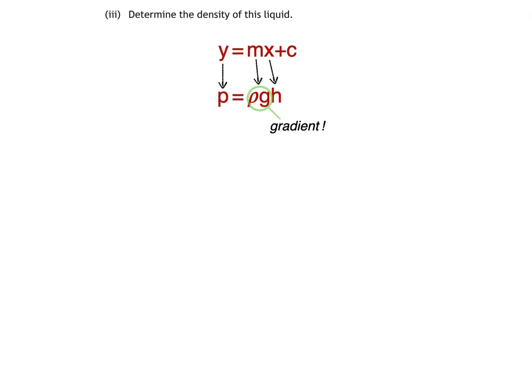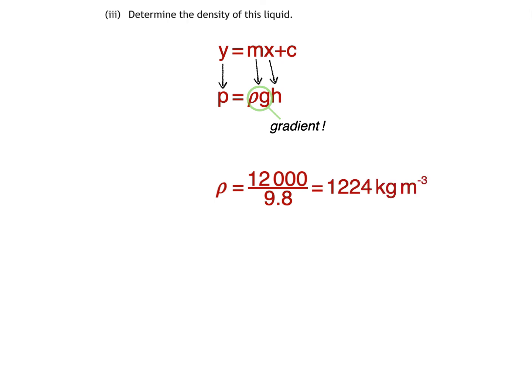Since we know that the gradient of our graph is equal to ρg, and we calculated the gradient to be 12,000, we can write this. To calculate density ρ, we divide both sides by g, where g is gravitational field strength 9.8 N per kilogram. That gives a density of 1,224 kg per cubic metre, or to two significant figures, 1,200 kg per cubic metre, which you could also write as 1.2 x 10³ kg per cubic metre.